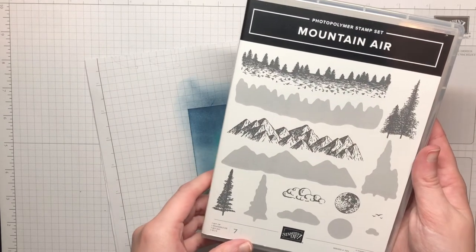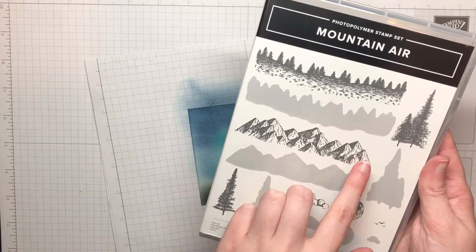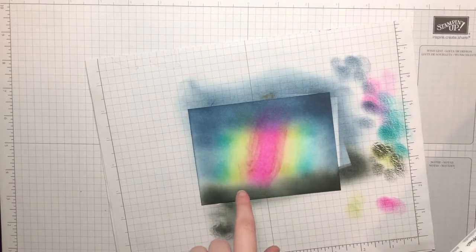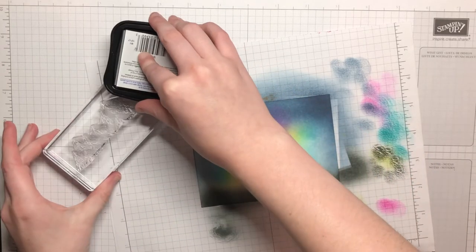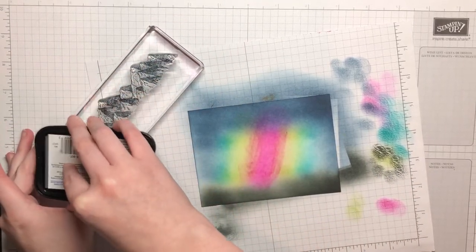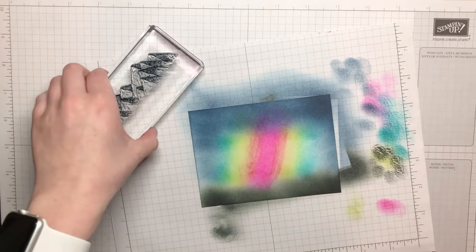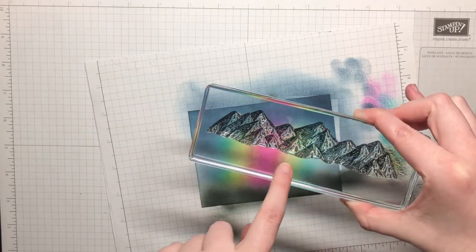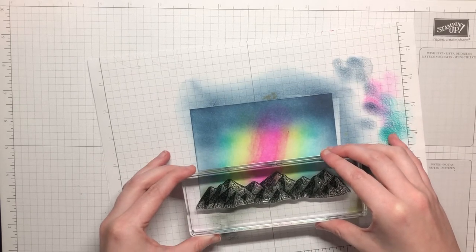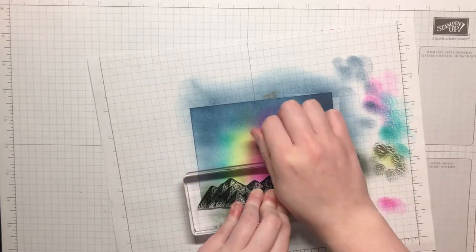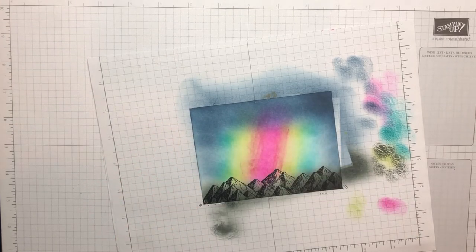So now I am using the Mountain Air stamp set and I'm going to be using the mountain image and then also this tree image for the inside. So I've got the mountain here, got my black ink here, and I'm gonna go ahead and ink this up, making sure it gets a good inking there. And I want these mountains to have a flush bottom on the card so I do need to go down a little bit and I'm just gonna go ahead and ink that down right there on the bottom of the card.